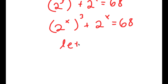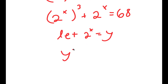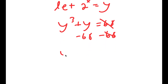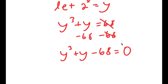Now I'm going to let 2 to the power of x equal y. So I have y to the power of 3 plus y equals 68. Subtracting 68 from both sides gives y cubed plus y minus 68 equals 0.